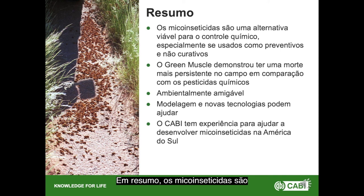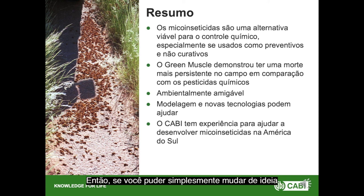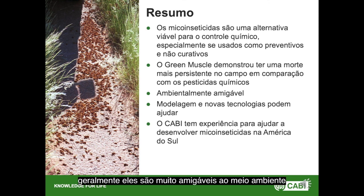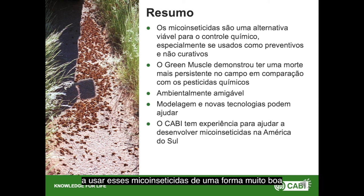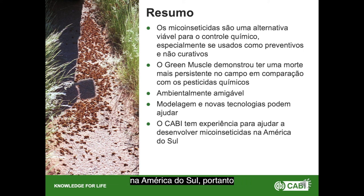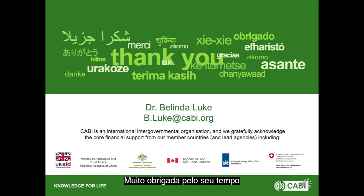In summary: micro insecticides are a viable alternative to chemical control, especially when used preventatively — shifting thinking from reacting to a pest problem to preventing a small problem becoming a large one. Green Muscle has demonstrated better persistence in the field compared to chemical pesticides. Micro insecticides are generally environmentally and human-friendly, and modelling and new technology can really help maximize their use. CABI has the expertise to help with micro insecticide development in South America — please get in contact with us.